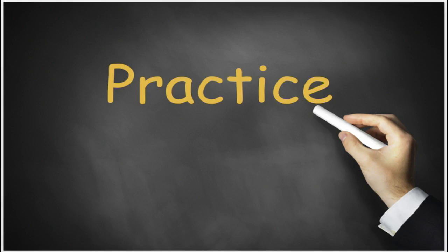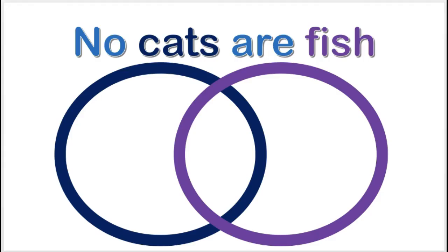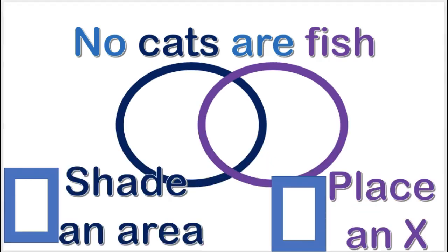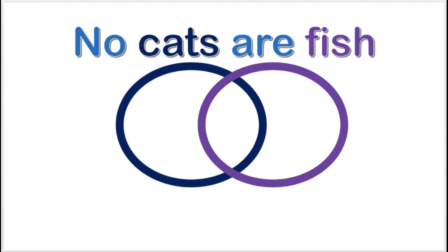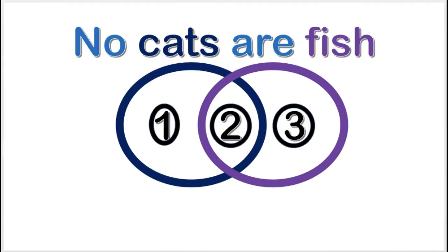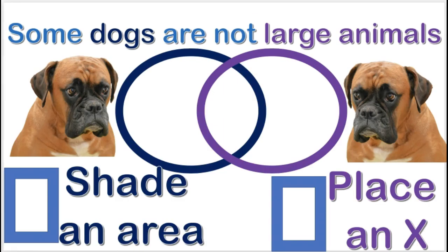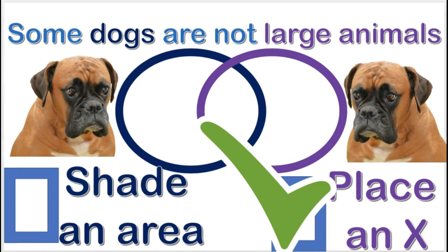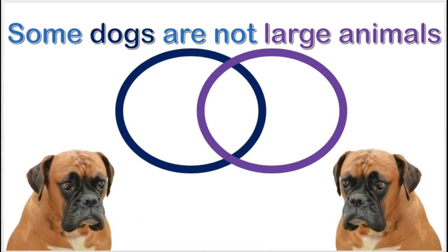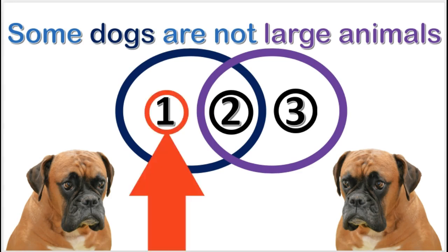Let's work a few practice problems. Practice problem number one: what must you do to diagram this proposition? You must shade an area. Which area must be shaded? Shade number two — the overlap area. Next practice problem: what must you do to diagram this proposition? Place an X into an area. Which area does the X go? Area one. The X represents a dog that is not large.